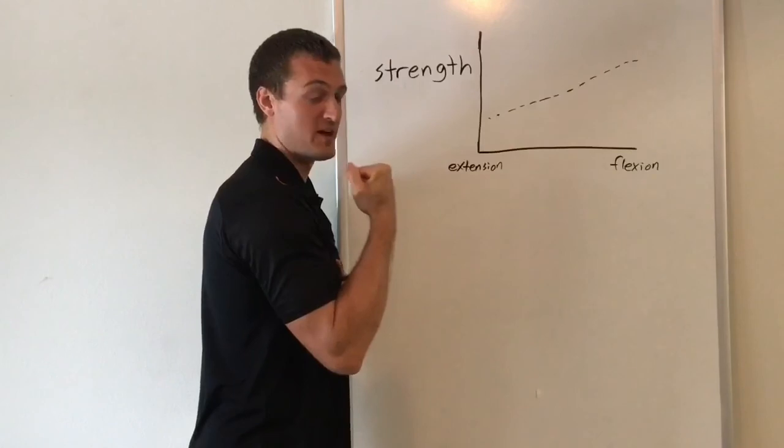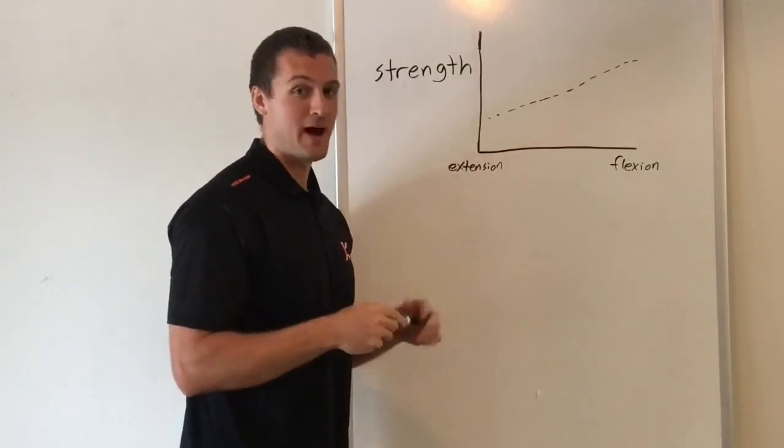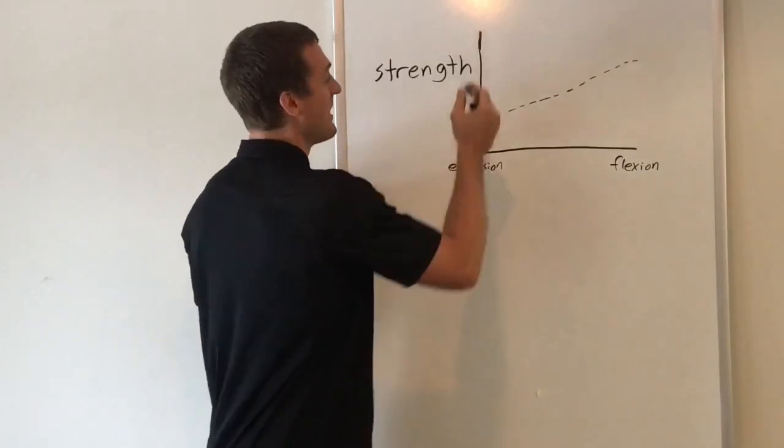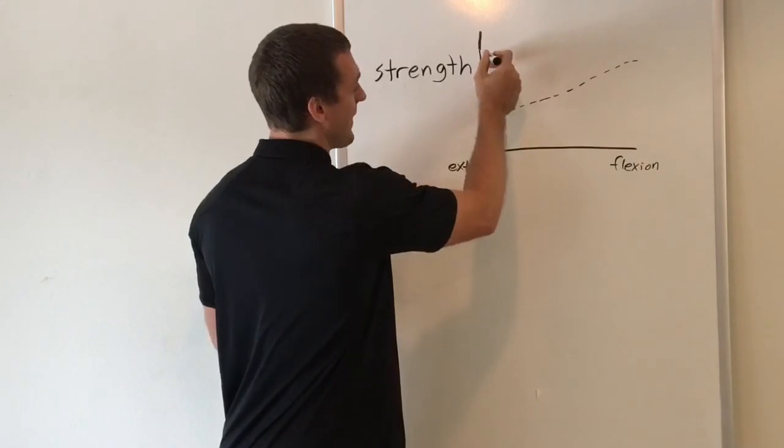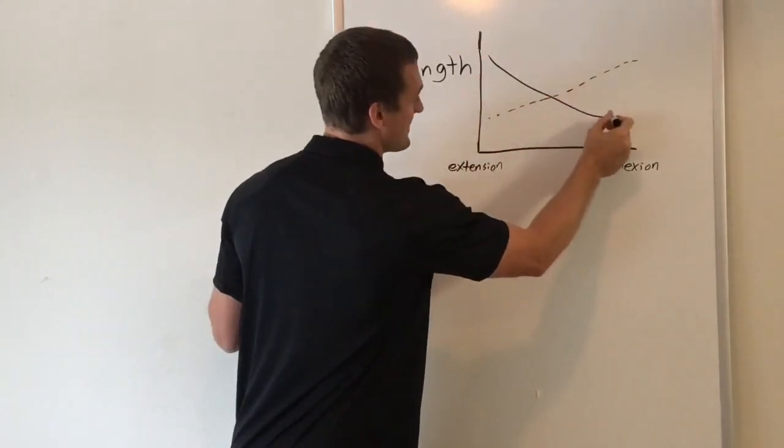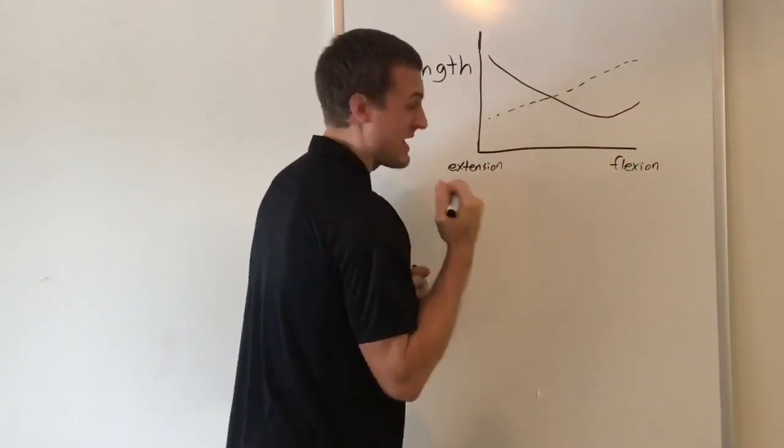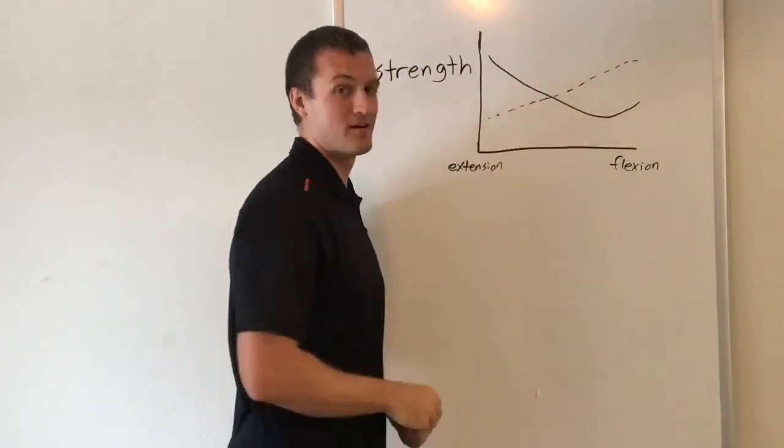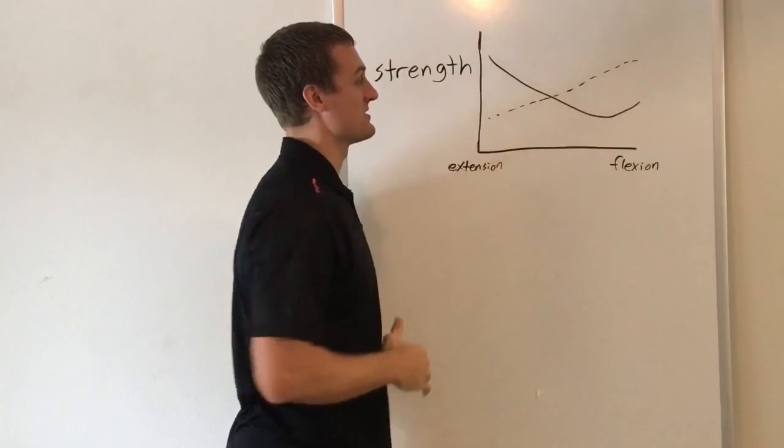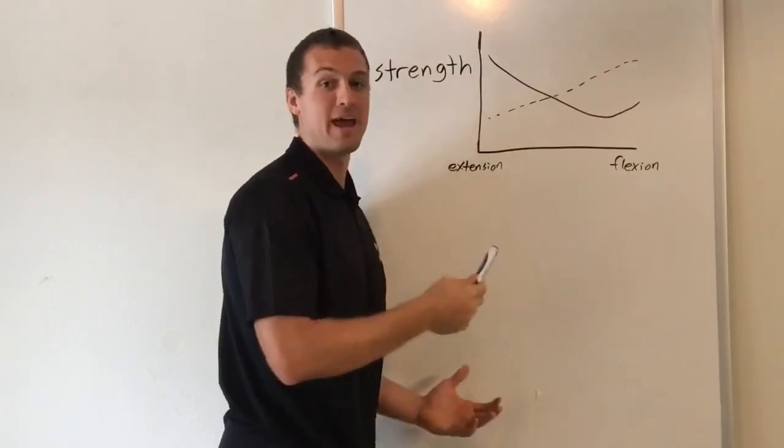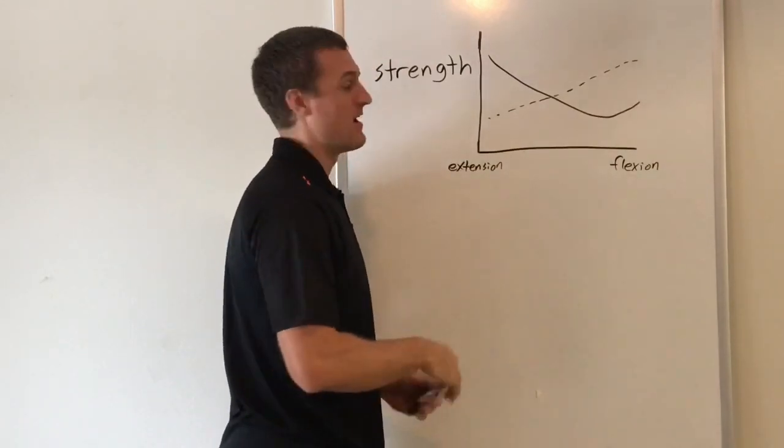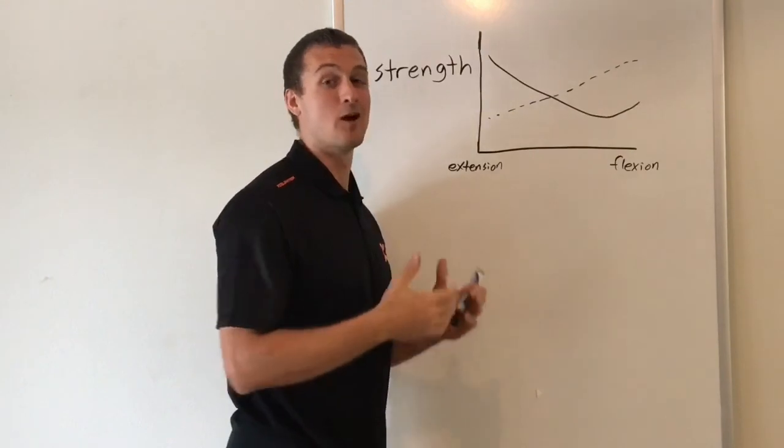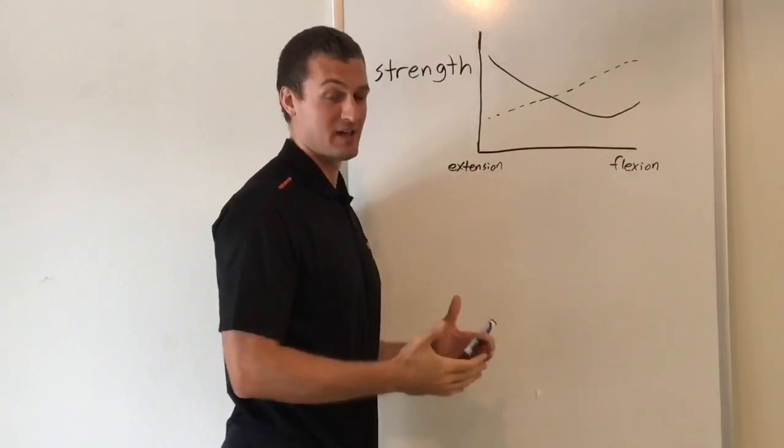The strength curve of a bicep curl is going to be higher up here and then it's going to trend downwards and then maybe go up a little bit at the end as we get to the top. But now it's the opposite pattern of your accommodating resistance. So if you put a band or use chains on a bicep curl, that resistance is now unaccommodating. It's the opposite of accommodating.